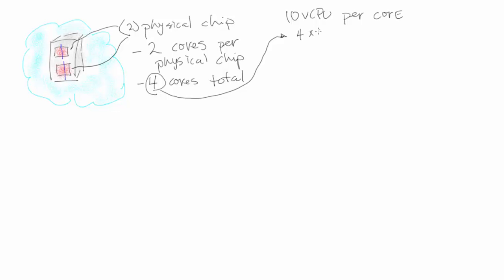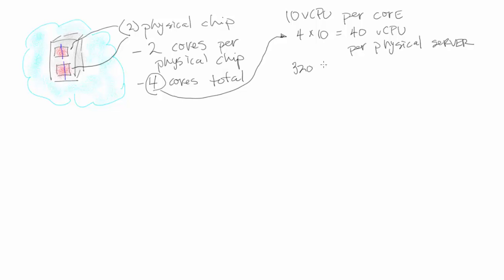We're going to take four cores and multiply that by 10. If you're not comfortable with 10 virtual CPUs per core, put five — whatever you feel is best for your environment, size it that way. Here we're going with 10 virtual CPUs per core, which gives us a total of 40 virtual CPUs on this box.